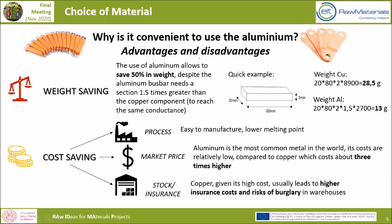Let's take a look at the main key points related to the material choice. The first point is related to weight saving. Even if a bus bar is small and light compared to the overall weight of a vehicle, it is still an advantage to choose a bi-material bus bar because it would be lighter. A bi-material bus bar is lighter even if, to ensure the same conductance, the aluminum part must be thicker.